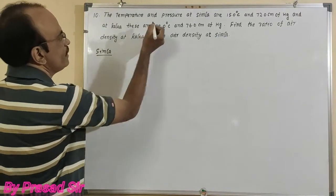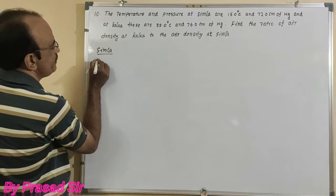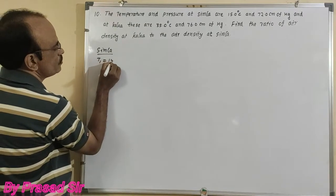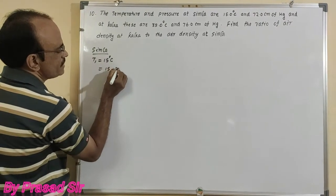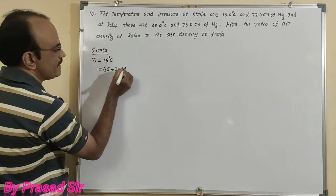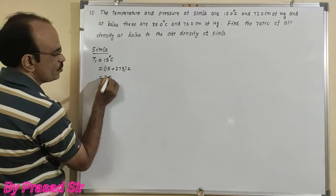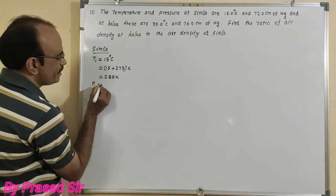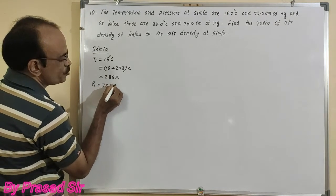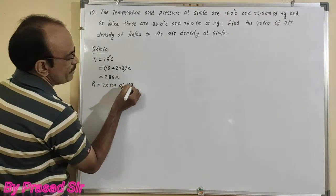At Simla, the temperature T1 equals 15 degrees centigrade. Converting to Kelvin: 15 plus 273 equals 288 Kelvin. The pressure P1 equals 72 centimeters of mercury.